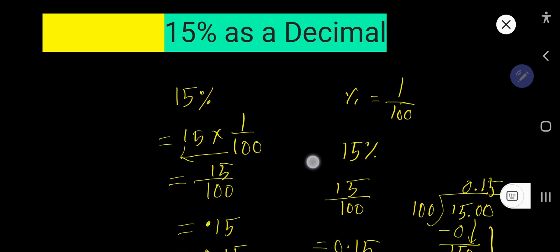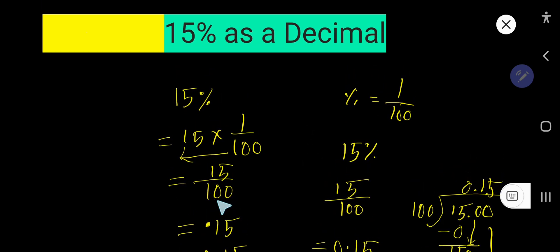0.15 is the answer. These are the two ways. The best way is to count the number of zeros and then move the decimal point from right to left that equal number of zeros.